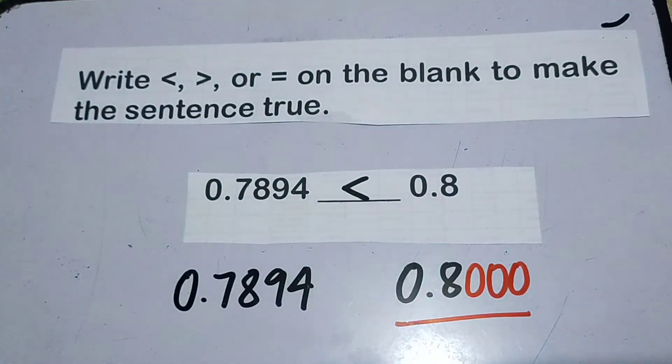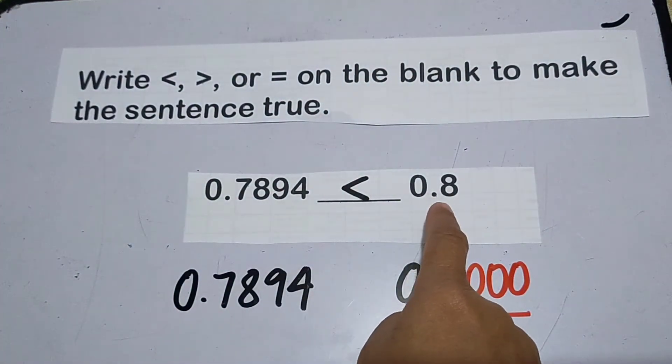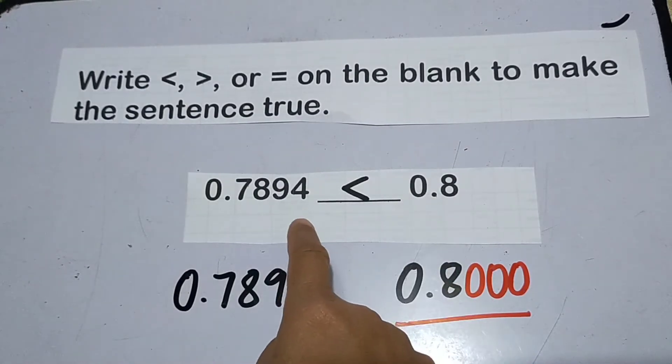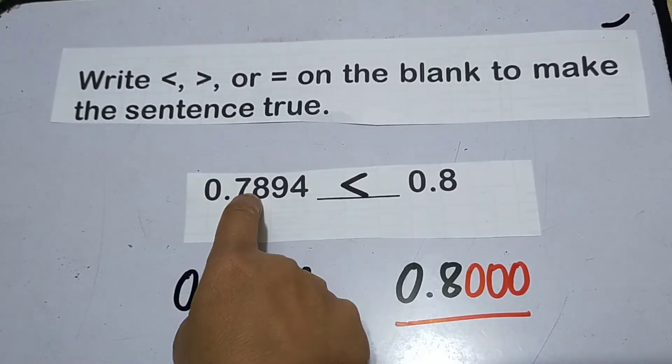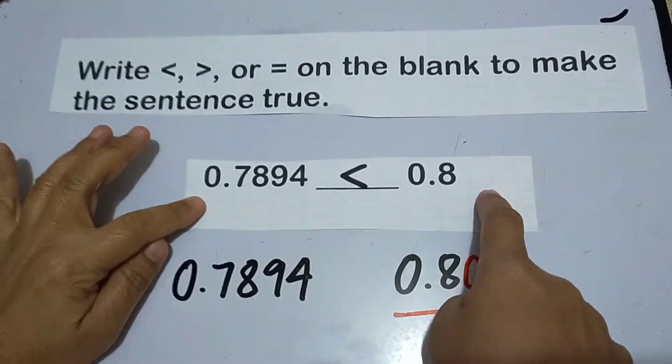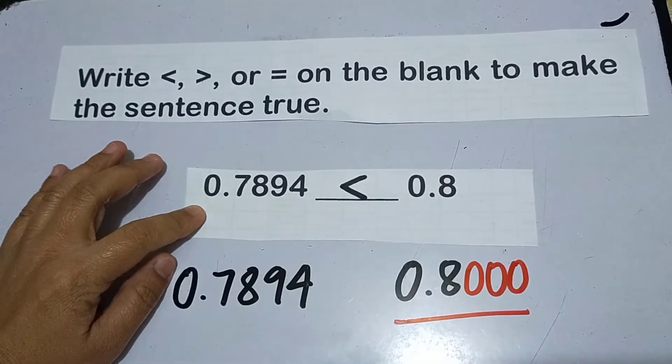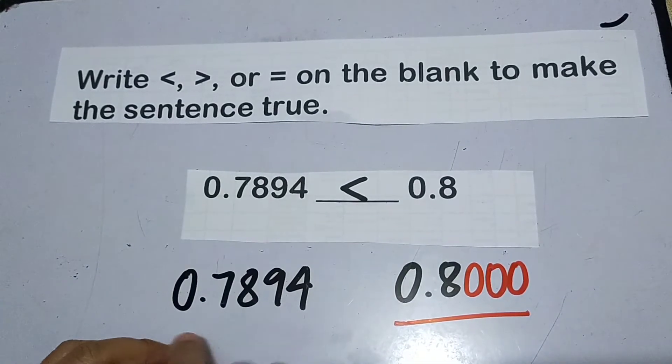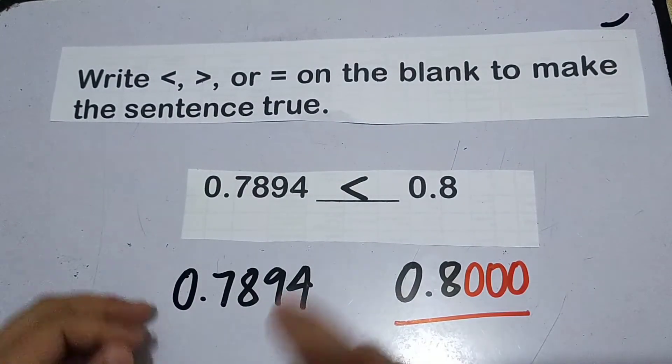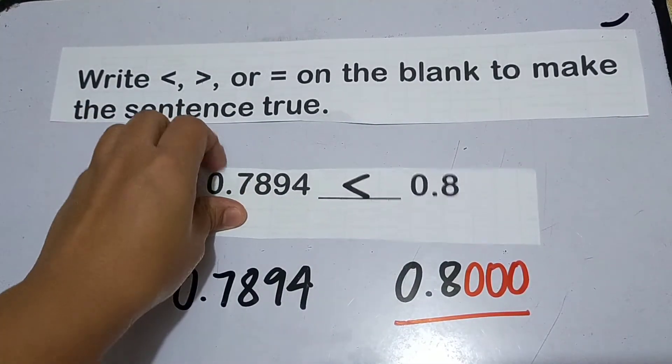Kasi kung ang ikukumpara yung dami ng digits, iisipin mo kagad na mas mataas to. Pero kapag pinarehas pala yung bilang ng digit, ito naman pala yung mas malaki. So much better kung hindi magkaparehas ang bilang ng digits, gawin niyo muna siyang magkaparehas.